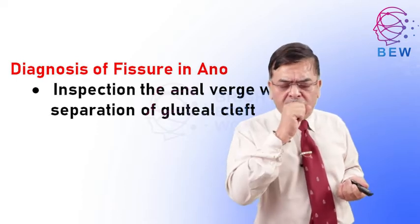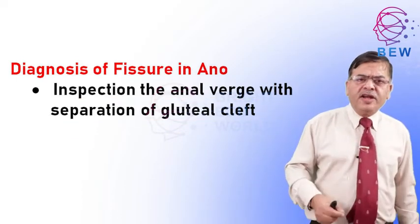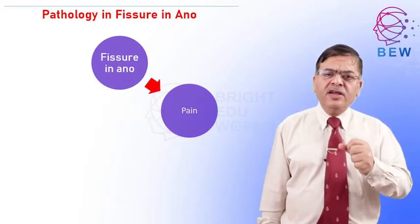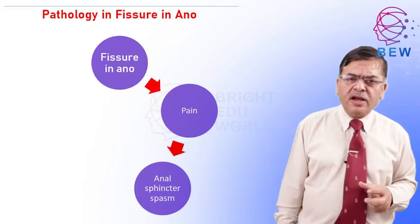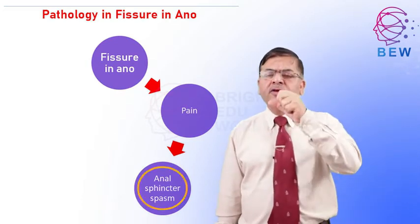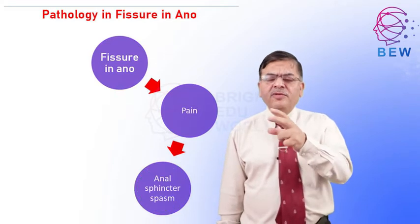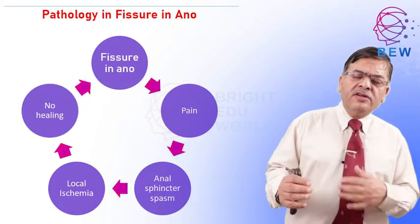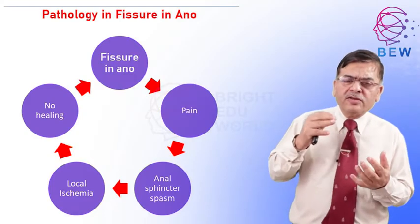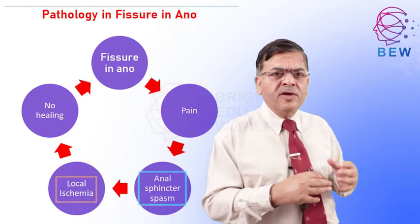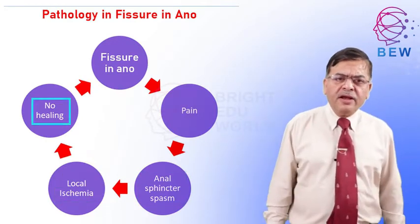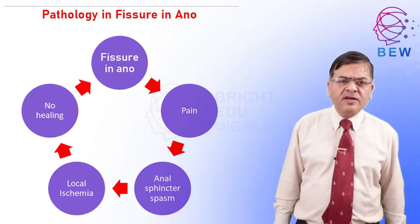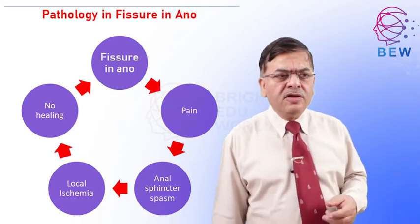The problem with fissures is that because of the intense pain there is intense spasm of the internal sphincter, and because of that spasm there is ischemia of the area. Because of ischemia, the fissure doesn't heal. It is a cycle: pain causes spasm, spasm causes ischemia, and ischemia prevents healing. What is required for healing is complete relaxation of the internal sphincter.